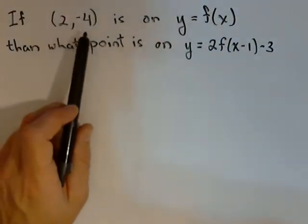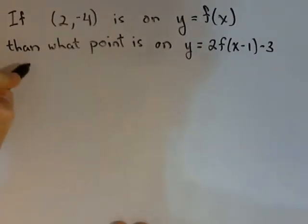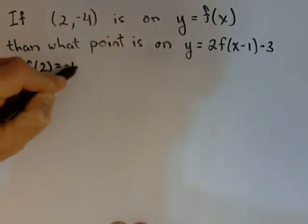So what we know is the point 2, negative 4 is on the graph of y equals f of x, or we could also say f of 2 equals negative 4.